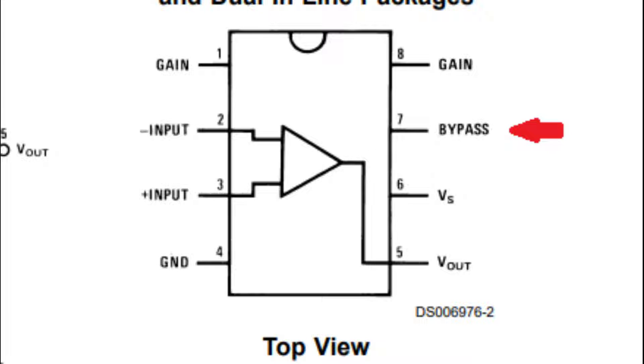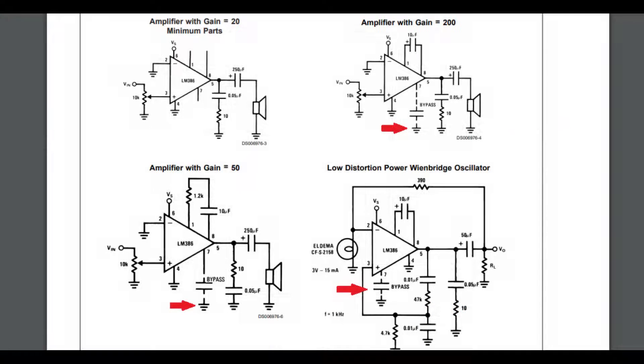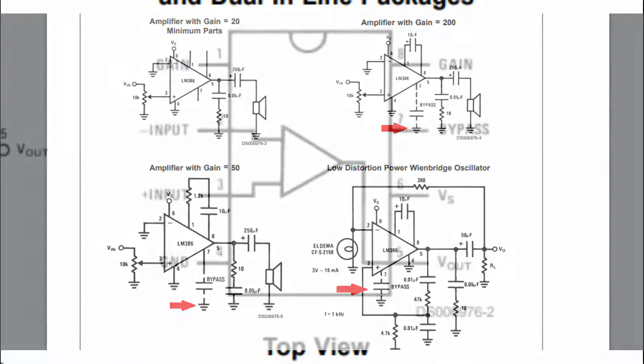This bypass pin is here to help reduce noise at the input. If you look at these schematics on this datasheet, you can see that some of these circuits use the number 7 pin with a capacitor to ground. So if you are having noise issues with this amplifier, then you might try putting a capacitor from pin 7 to ground and see how it affects the circuit.